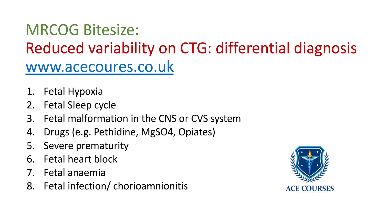Fifth, you need to consider severe prematurity, which can be a cause for reduced baseline variability. Sixth, it could be fetal heart block. Seventh, it could be fetal anemia, and that could be associated with a sinusoidal pattern on the CTG.